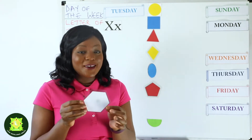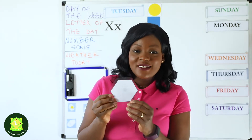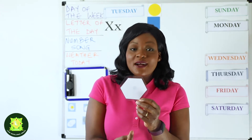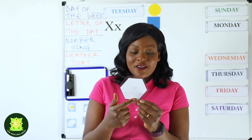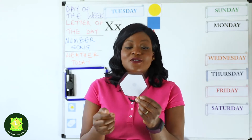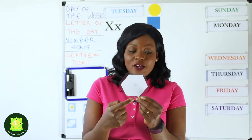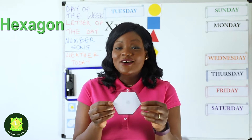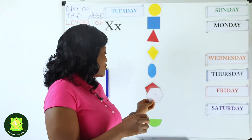Let's go to the next one. This one looks even more tricky. Let's see how many sides this shape has. Do you want to count with me? Let's count the angles: one, two, three, four, five, six. So this shape has six sides and six angles. Let's count one more time: one, two, three, four, five, six. And do you know what the shape is called? This is a hexagon. Well done everyone.